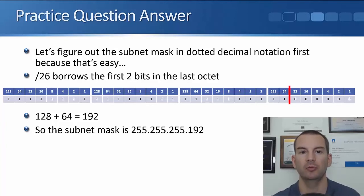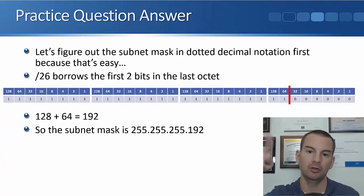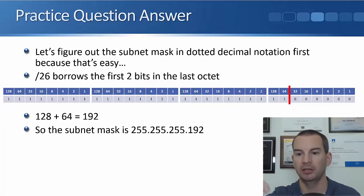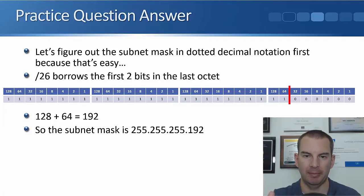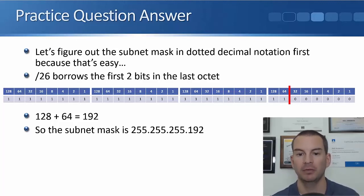The question is to work out the dotted decimal notation for a /26. Just under your bit pattern at the top of the paper, write out 26 ones, then put in six zeros for the host portion of the address. Also draw a line where the subnet mask boundary is. The first octet is all ones — that's 255. The second octet is also 255. The third octet is also 255.